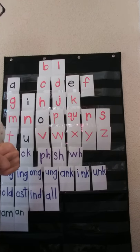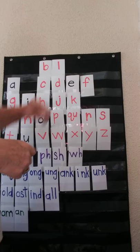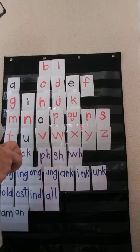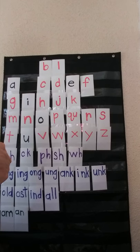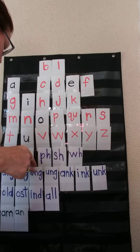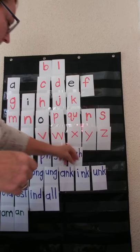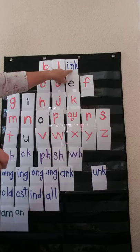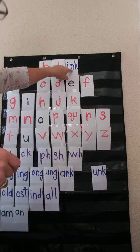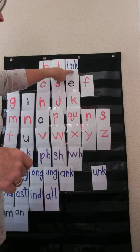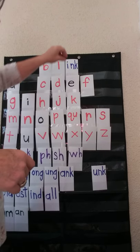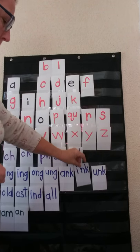Let's spell the word 'blink.' B, L, and then I hear the INK sound. INK is a welded sound — part of our fun family of ang, ing, ong, unk. Buh-l-ink — it makes one sound at the end: blink. That is called a welded sound.